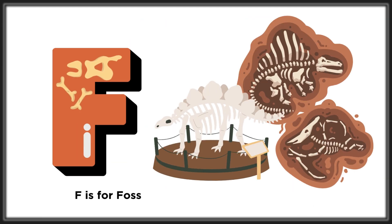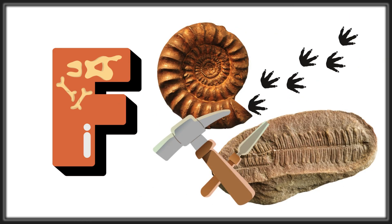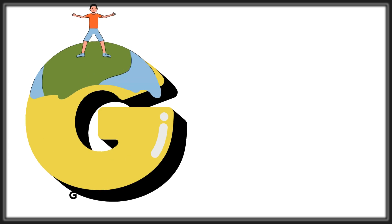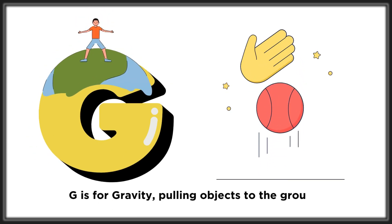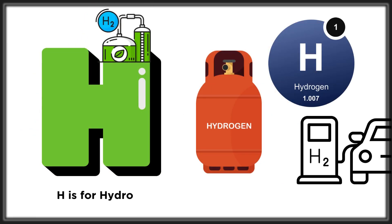F is for fossils, showing life from yesterday. G is for gravity, pulling objects to the ground. H is for hydrogen, the most abundant atom found.